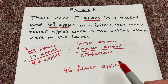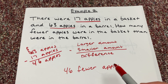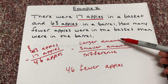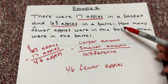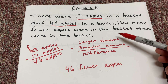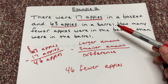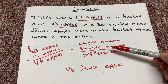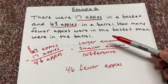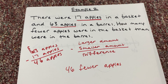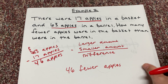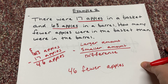Again, this is how we find the answer in 4th grade — we found our larger amount in the word problem, then our smaller amount, and subtracted to find the difference. We're comparing apples to apples here. Let's look at Example 3.